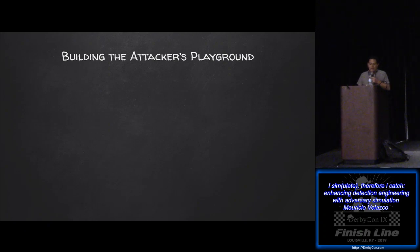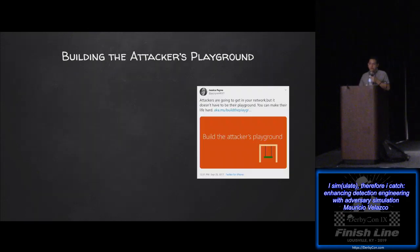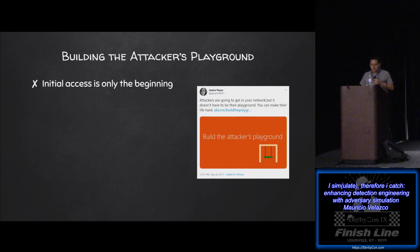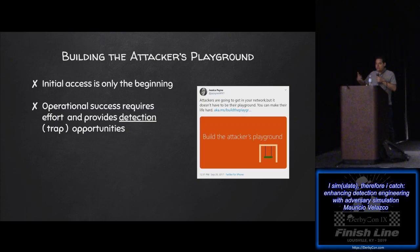In 2019, the blue team is building the attacker's playground — a term I borrowed from Jessica Payne who wrote a blog post in 2017 about this. Initial access is only the beginning. It takes effort, time, and several steps for an attacker to achieve operational success. These steps provide us with detection opportunities — what I want to mention as traps. The more traps we deploy in our environment, the more likely for an attacker to trip one of them, and they only need to trip once for us to potentially catch them.